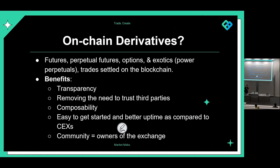So what are on-chain derivatives? Derivatives are contracts that derive value from an underlying asset and they're priced as some function of the spot price of the asset. Derivatives should be closely in line with the price of the underlying asset. Different examples are futures, perpetual futures, options, and there are also exotic derivatives — one example is power perpetuals.